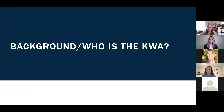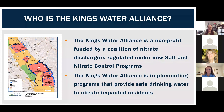So the Kings Water Alliance — who are they? As a result of a new state regulation for nitrates, management zones were developed in areas identified by the state as having high nitrates. I represent the Kings Water Alliance management zone. You can see here on this map with the bold blue border, surrounded by several other management zones where high nitrates have been identified. We are a nonprofit funded by a coalition of nitrate dischargers organized to specifically comply with this new regulation called the Salt and Nitrate Control Program. We are currently implementing programs to provide safe drinking water for all nitrate-impacted areas and residents within our boundary.